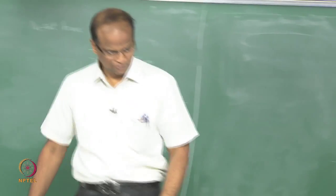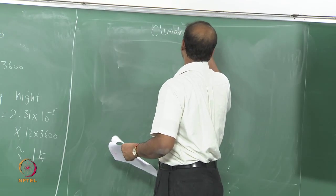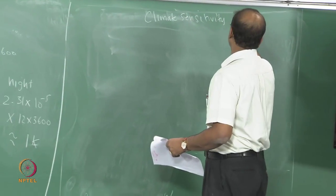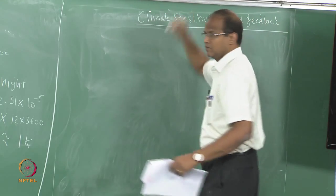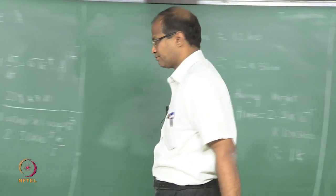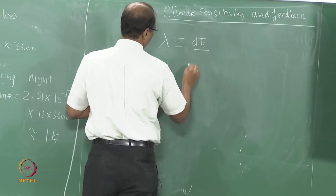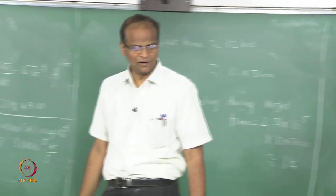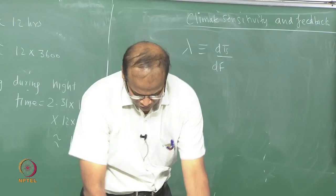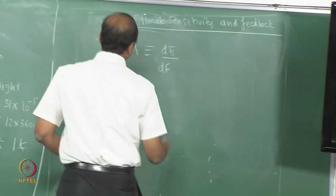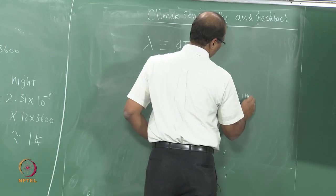Next we have to look at climate sensitivity and feedback. The sensitivity of the climate is given by the rate of change of temperature with respect to F, where F is basically the radiative forcing.